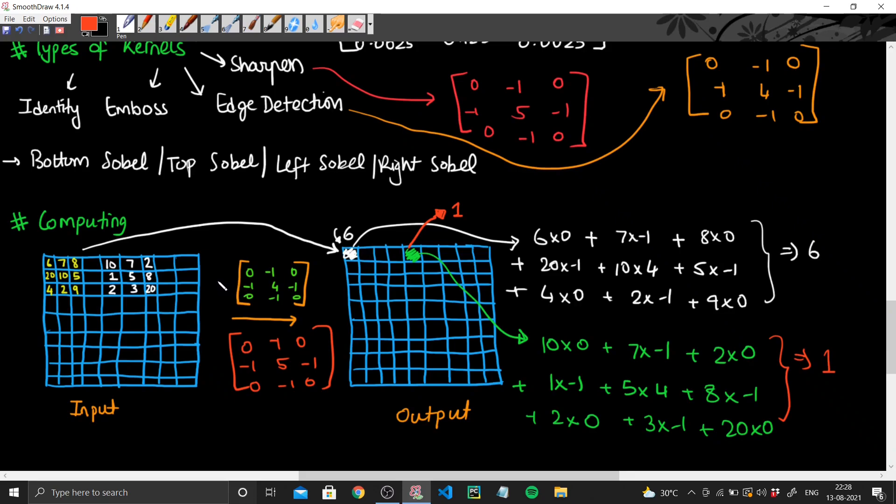So for each matrix you do this, and you get the different values of each pixel. And the resultant image that you get as your output is the new image after you have applied your kernel.